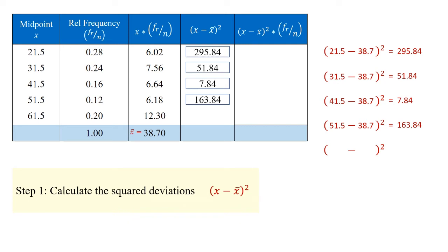Finally, for the oldest group, 61.5 minus 38.7, we square this deviation, and it gives us a total of 519.84.